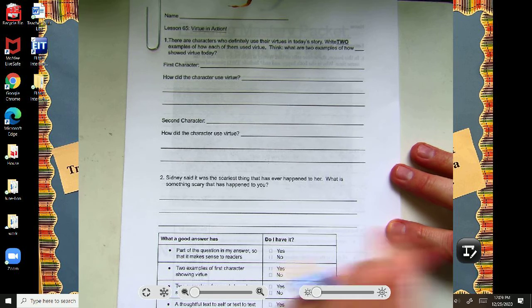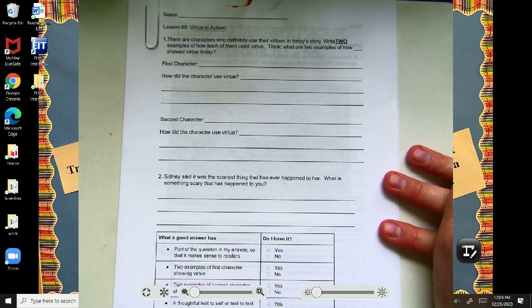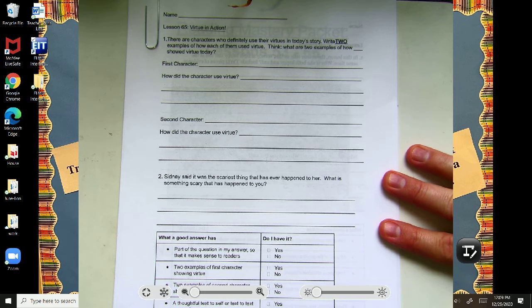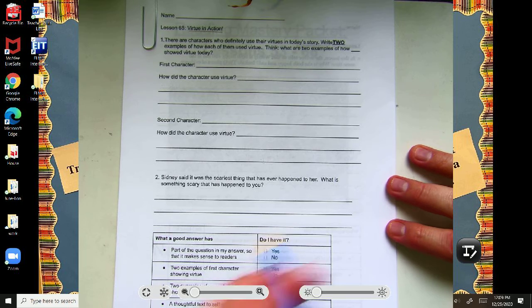Question number one. There are characters who definitely use their virtues in today's story. Write two examples of how each of them used virtue. Think, what are two examples of how blank showed virtue today?